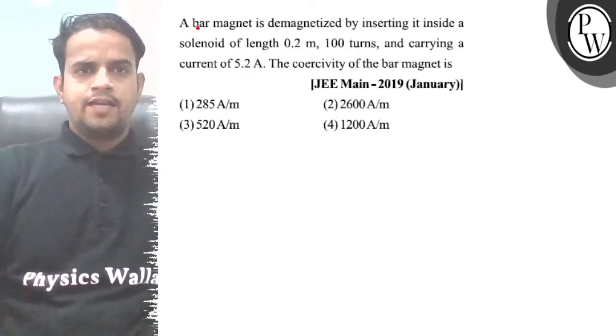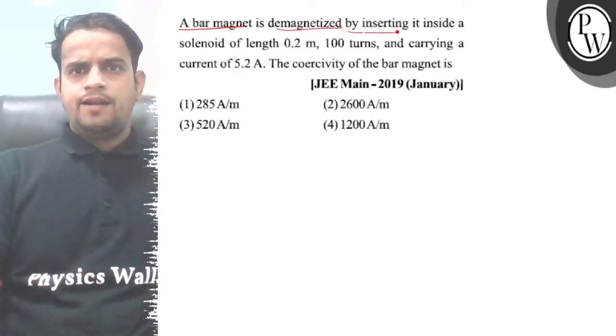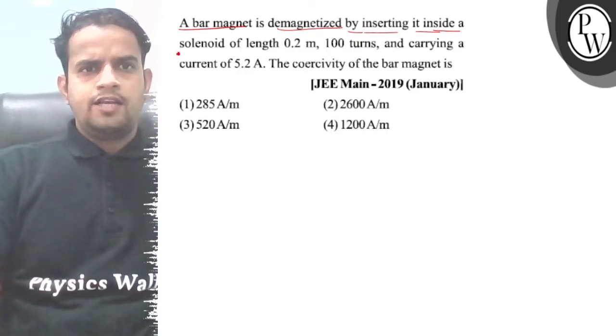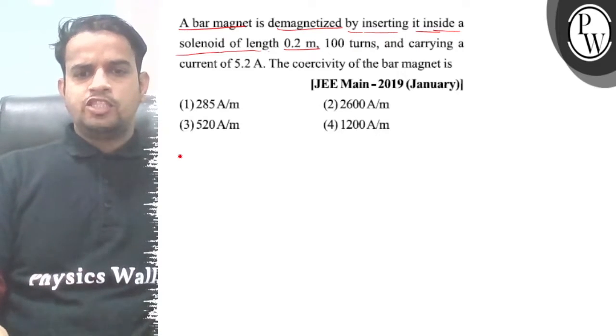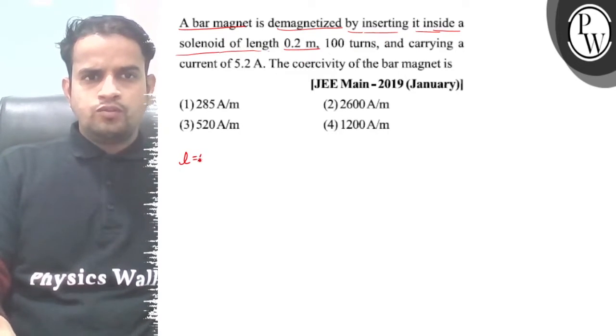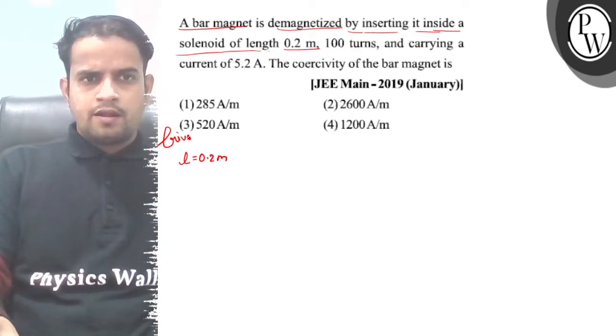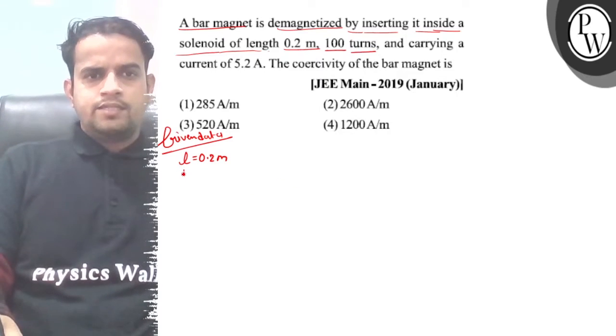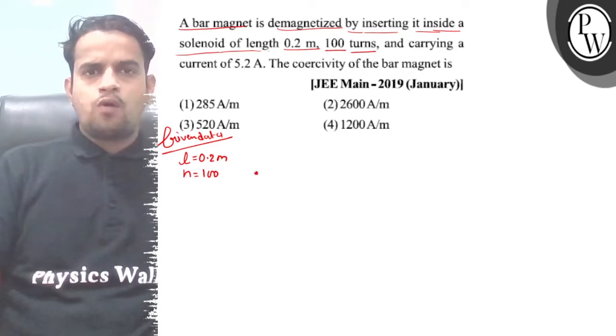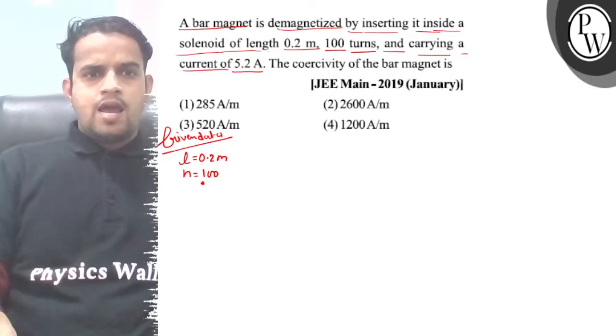Hello, let me consider this question. A bar magnet is demagnetized by inserting it inside a solenoid of length 0.2 meters. The solenoid has 100 turns and carries a current of 5.2 amperes.